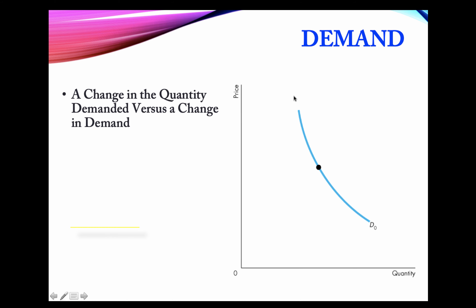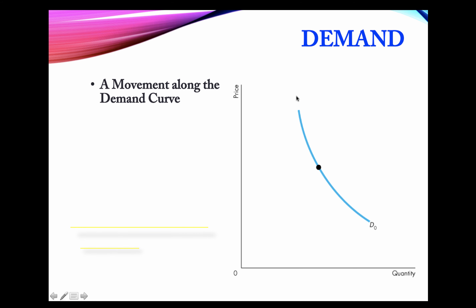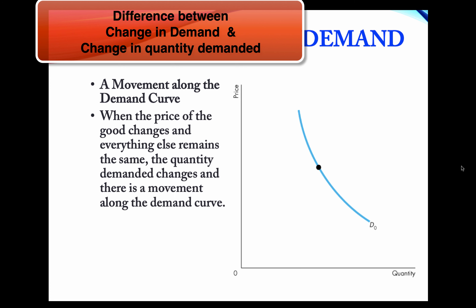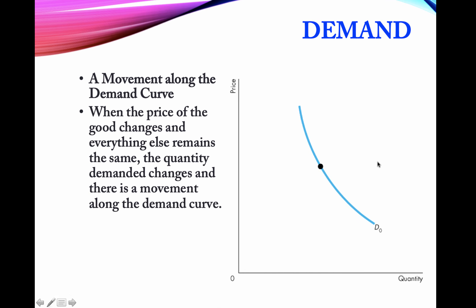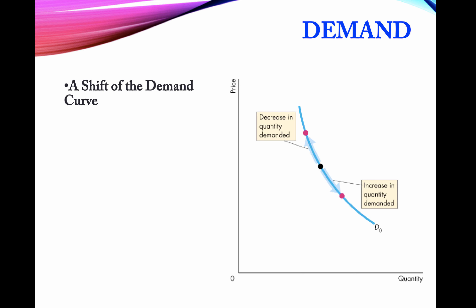Changing quantity demanded is really a movement along the demand function. We drew this demand function by asking how quantity demanded changes when price changes, so a change in price results in movement along the demand curve.